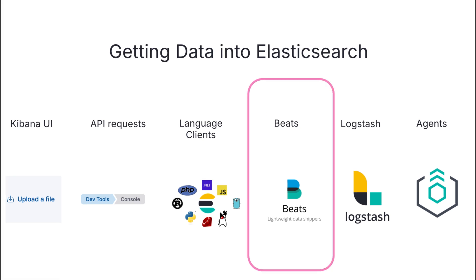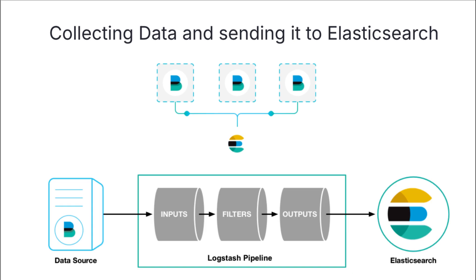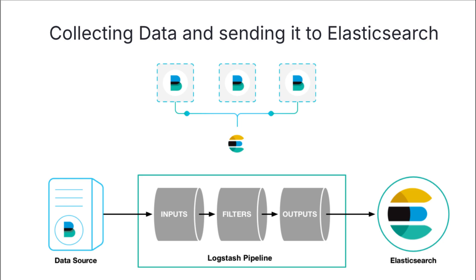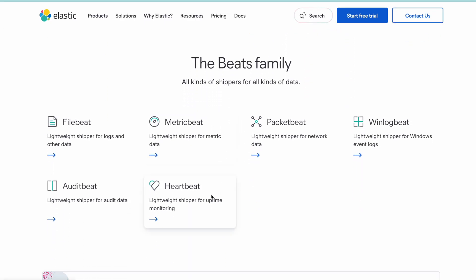To start with Beats: Beats are lightweight containers that can be installed on a specific machine, server, or source where your data is located or being generated, and they can automatically collect data and bring it into Elastic. This can be used together with a Logstash pipeline, which allows us to not only collect the data but also filter it, alter it, make any changes we want to it, and then send it to the final destination — in this case Elasticsearch.